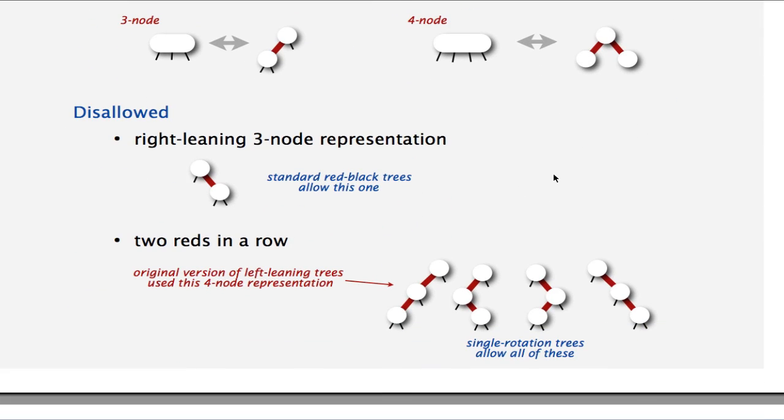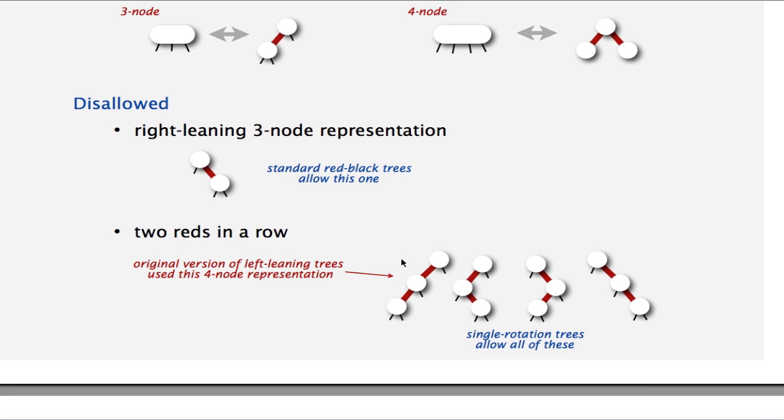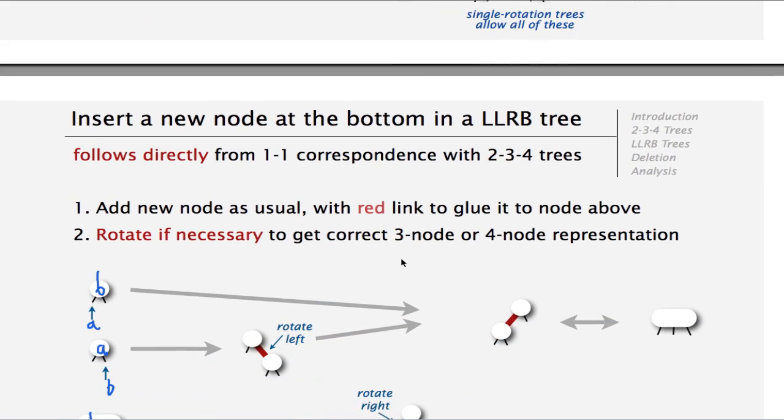So the main thing is that the representation is very specific. So the 3-node has only one representation, which is a red edge going to the left. And the 4-node has a simple representation, which is one node with a red edge going both to the right and the left. And this representation of a 3-node is not allowed. And these representations of 4-nodes are not allowed. So we will have to do some extra work to correct situations like that.